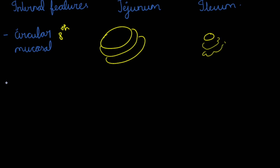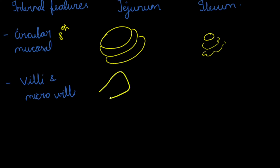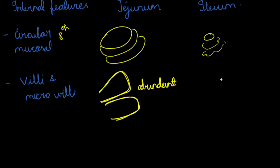Regarding the villi and microvilli: in the jejunum, the villi are very large, thick, and abundant. In the ileum, the villi are very short, thin, and less in number.